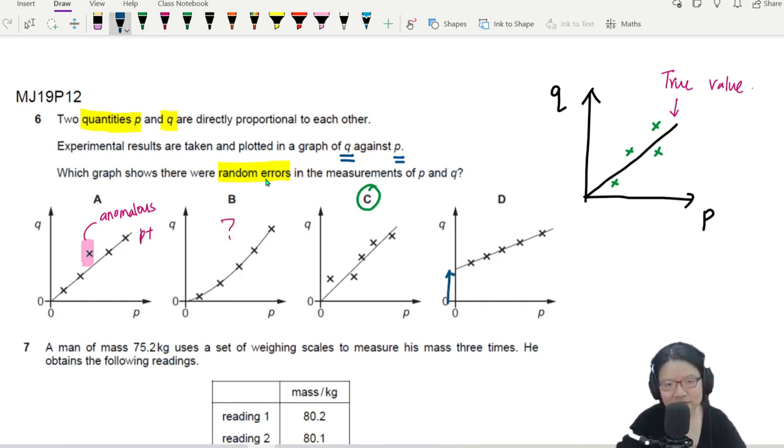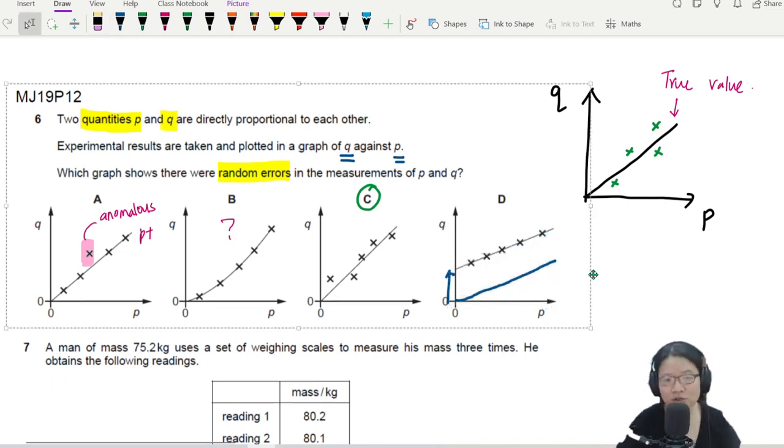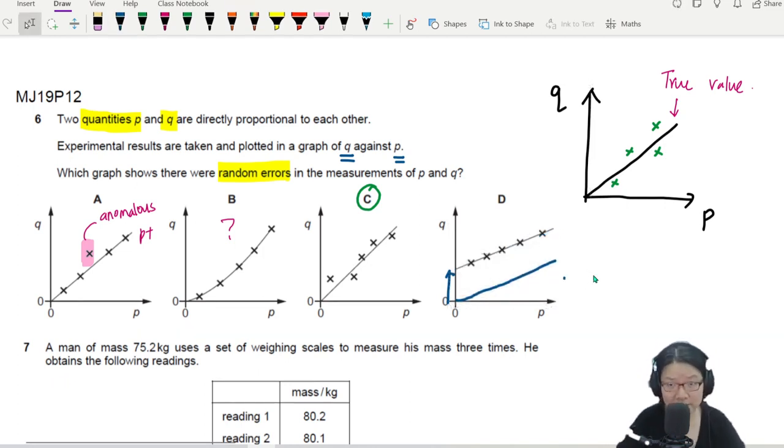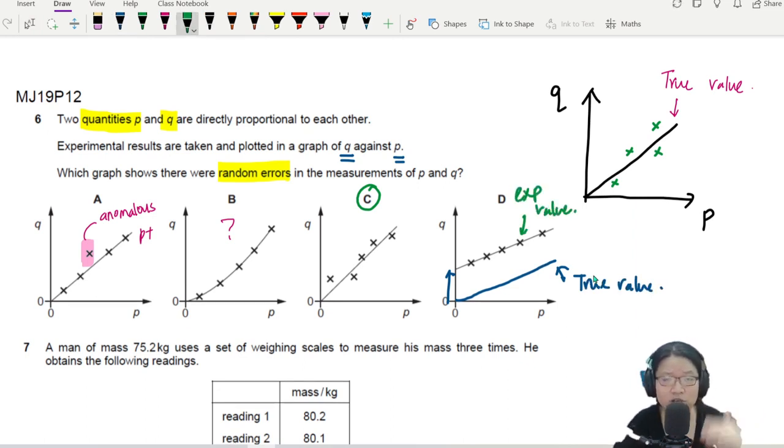If I move this line, this is the line that I get from the graph in D. If I move this line downward, it is directly proportional. So the line is supposed to be here. This is the true value. But this is your experimental value. This means what? Your experiment value is always bigger than your true value. Your Q is always bigger than the true value. So this one, part D, is a type of systematic error.